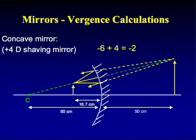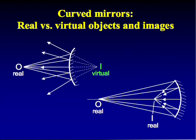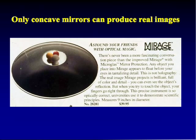Concave mirrors can produce real or virtual images depending on object position. When the object is beyond the focal point, rays converge to form a real image. This is the principle behind novelty 'real image' toys: two concave mirrors arranged so an object inside projects a real, full-color image floating above the opening — appearing to sit on a disc even though the actual object is hidden inside.